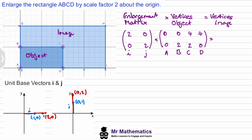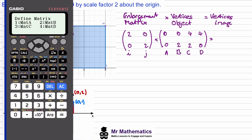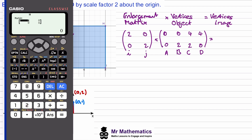So if we go to our calculator, we'll choose menu option for the matrices. We'll define matrix A as our enlargement matrix. We'll choose option one — this has two rows and two columns — and the elements are 2, 0, 0, 2. Now we'll go back to option two and define matrix B as the vertices of the object.